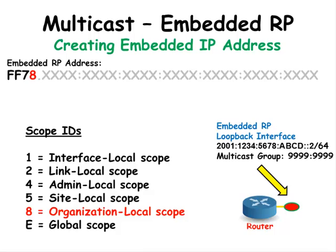Next, we need to consider how far we want the multicast packets to travel. We will want it within our organization or company, so I'm going to use the value of 8.